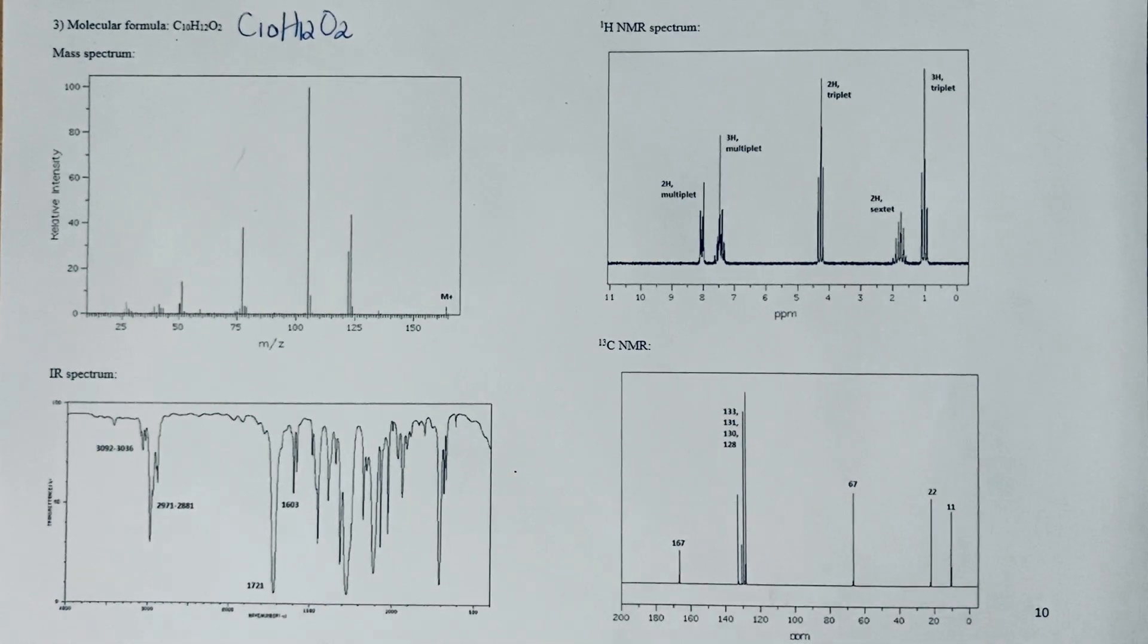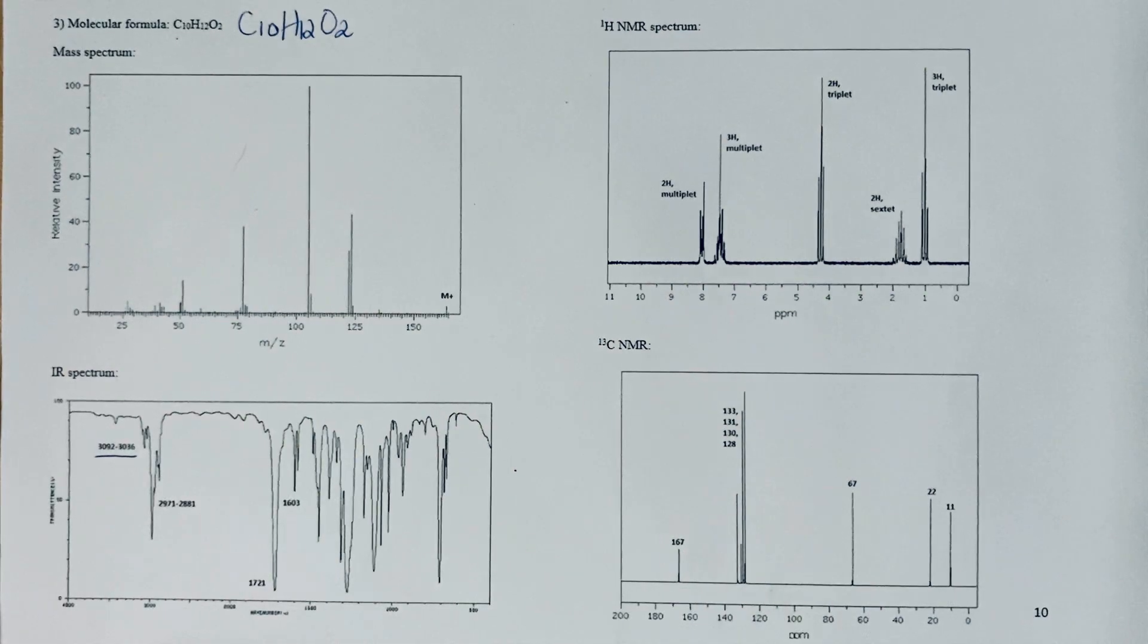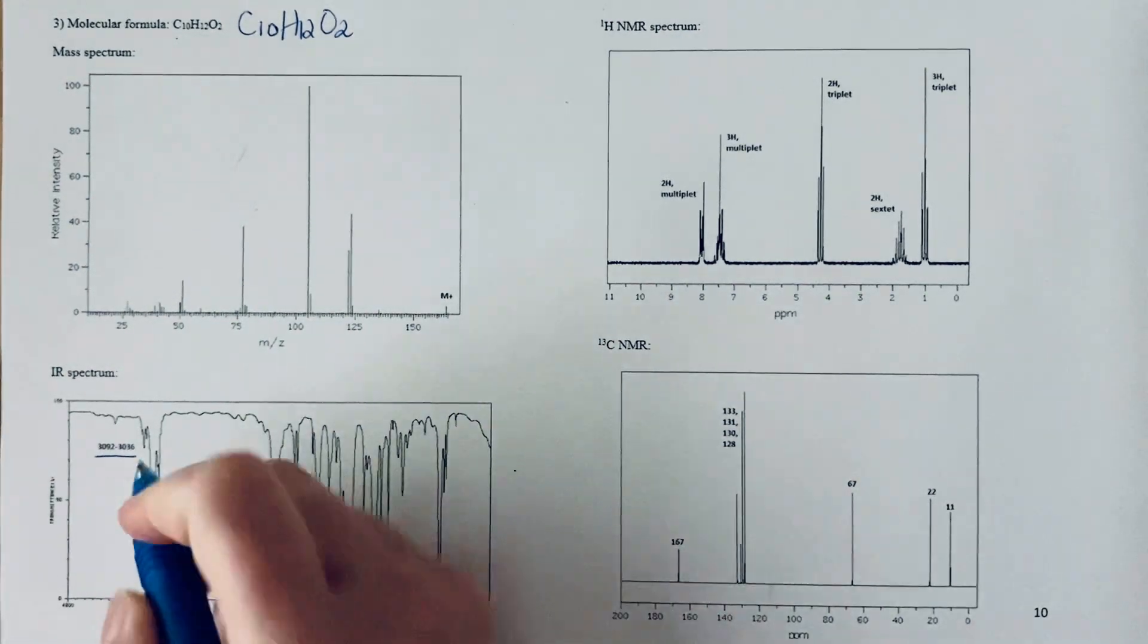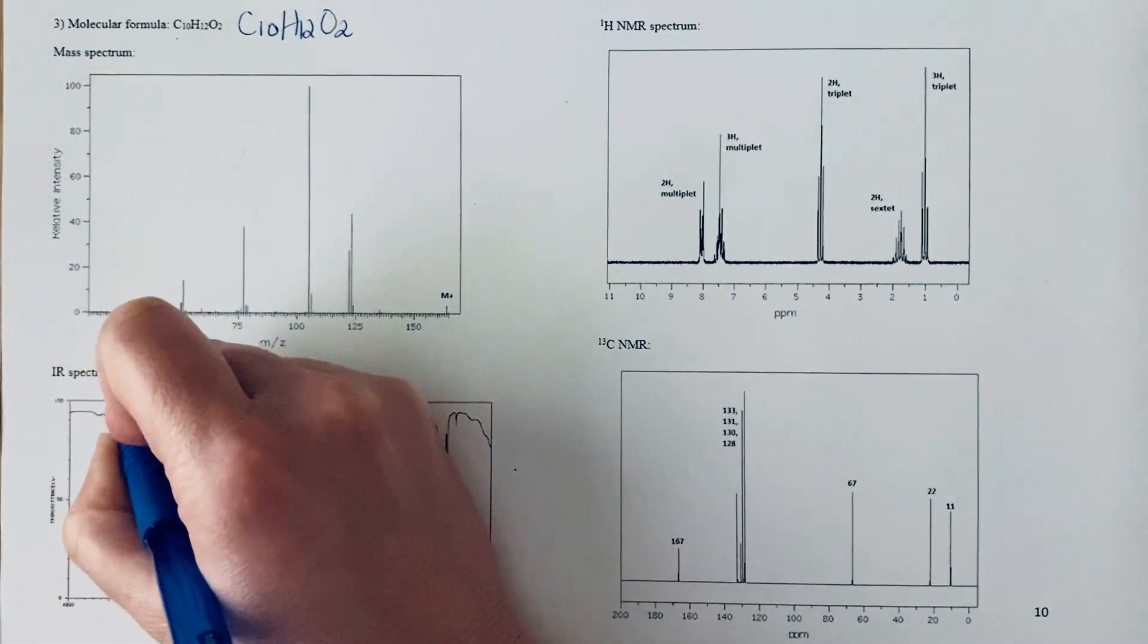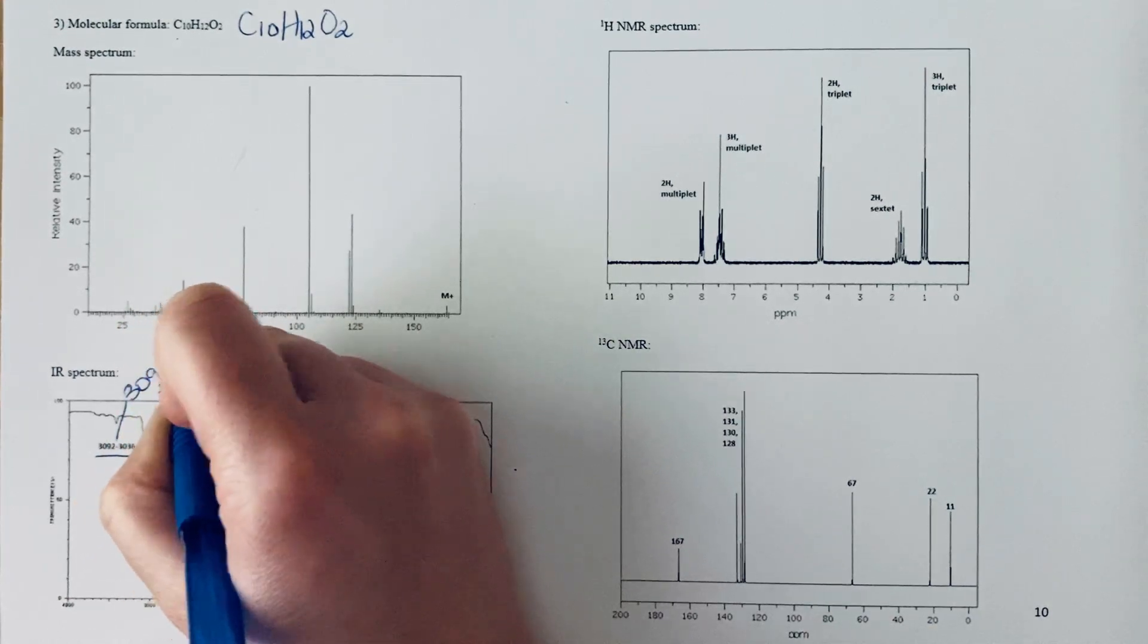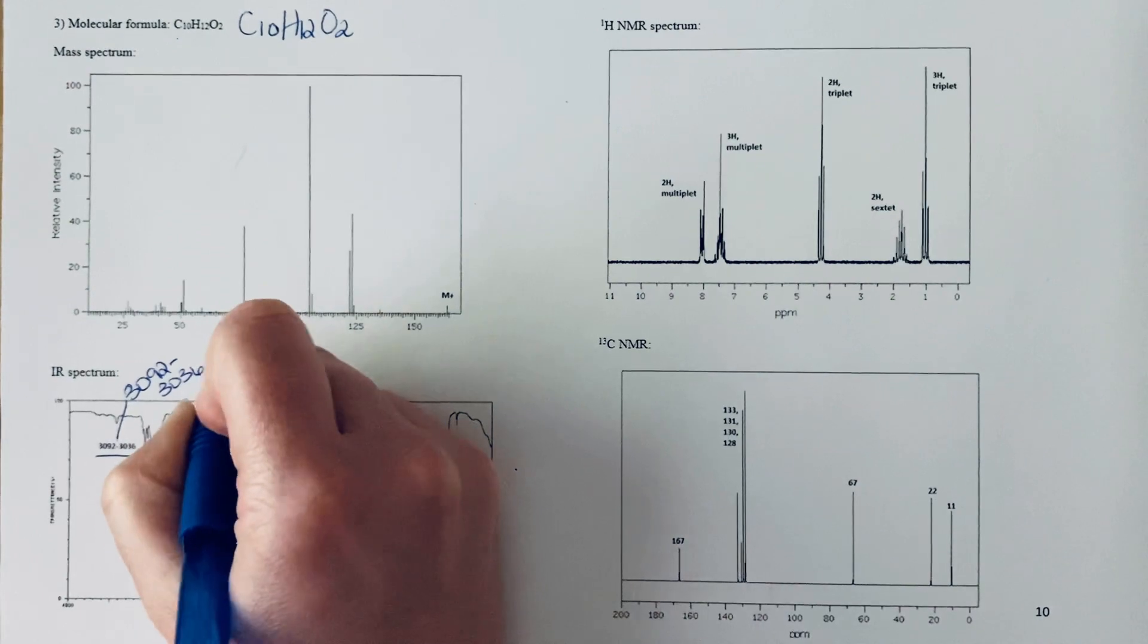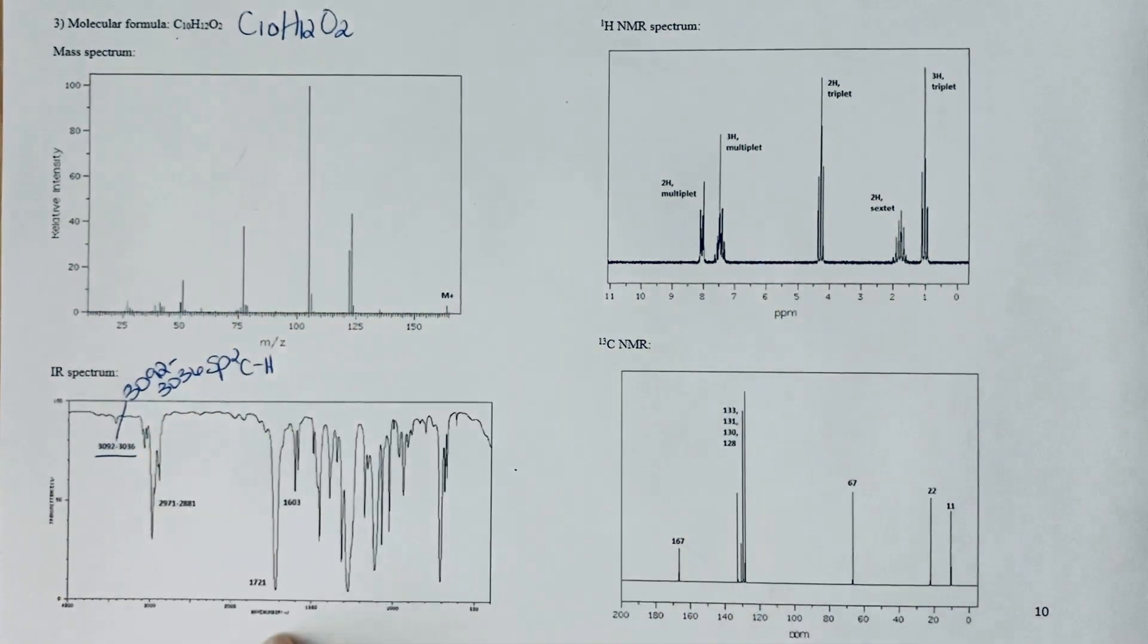Infrared spectroscopy is a nice place to start to get an idea of the functional groups. I can see we've got this set of peaks here at 3092 to around 3036. That's pretty indicative of sp2 hybridized carbons, specifically the carbon-hydrogen bond.